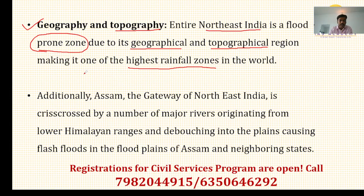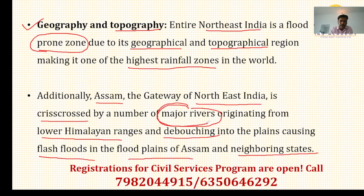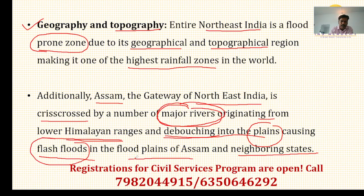Additionally, Assam, the gateway of Northeast, is crisscrossed by a number of major rivers originating from the lower Himalayan ranges, debouching into the plains and causing flash floods in the flood plains of Assam and neighboring states. Northeast India is crisscrossed by major rivers like the Brahmaputra and its tributaries, which originate from the lower Himalayan ranges.